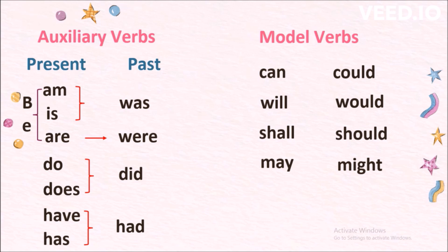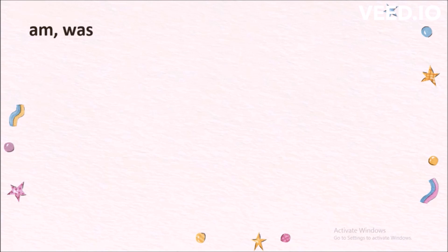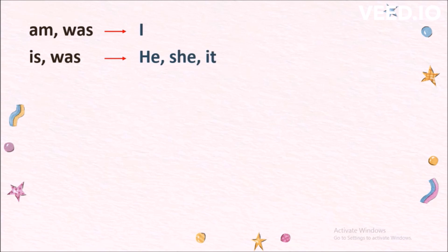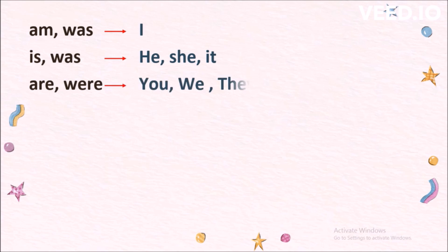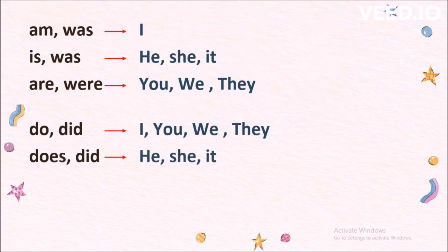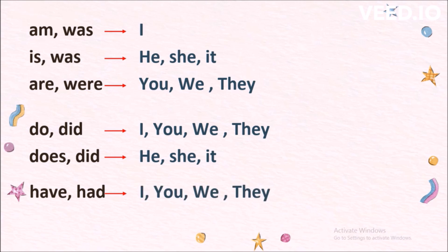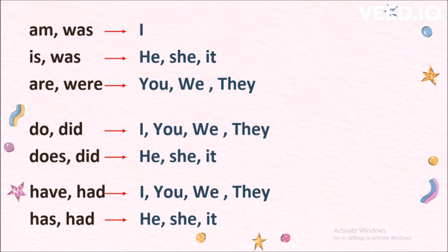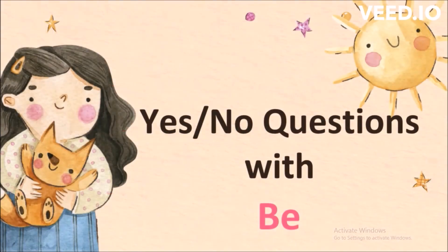We will discuss modal verbs separately. When it comes to am and was, we use them for I. For is and was, we use them for he, she, and it — that means for singular nouns. For are and were, we use them for you, we, and they — for plural nouns. Do and did are used for I, you, we, and they — plural nouns. Does and did are used for he, she, and it — singular nouns. Have and had are used for I, you, we, and they — plural nouns. Has and had are used for he, she, and it — singular nouns.